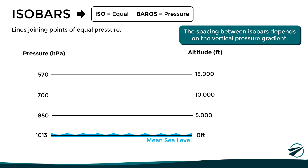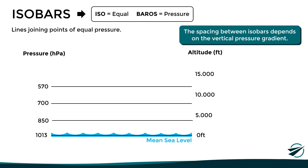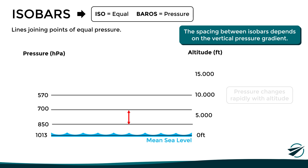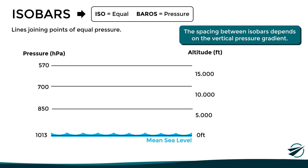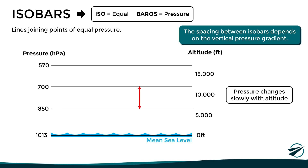The spacing between isobars depends directly on the vertical pressure gradient. If the isobars are closer together, it means that the pressure changes rapidly with altitude — a high vertical pressure gradient. On the other hand, if the isobars are widely spaced from each other, the pressure changes slowly with altitude — a low vertical pressure gradient. It is important to note that the spacing of the isobars has nothing to do with the pressure at sea level; the only thing that changed was the rate at which the pressure decreased with altitude.